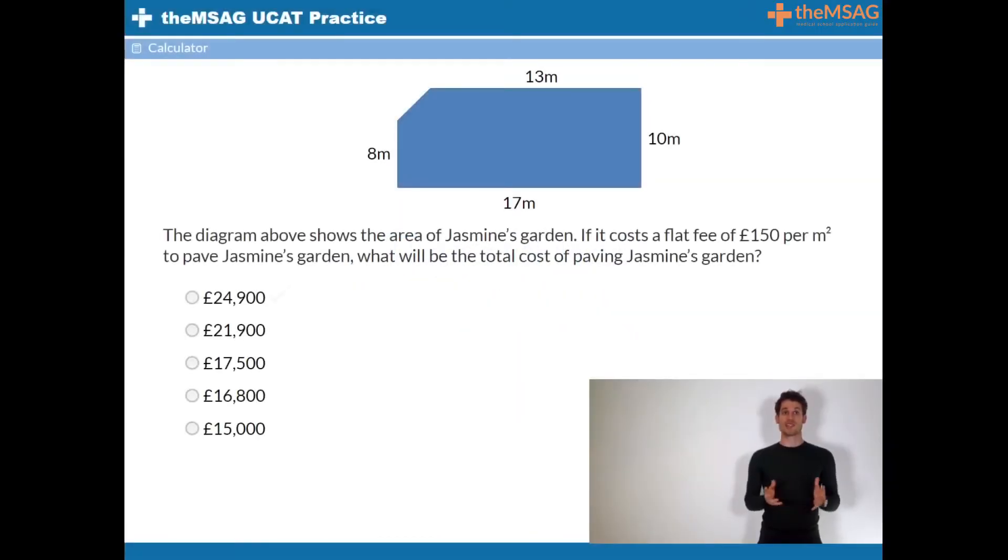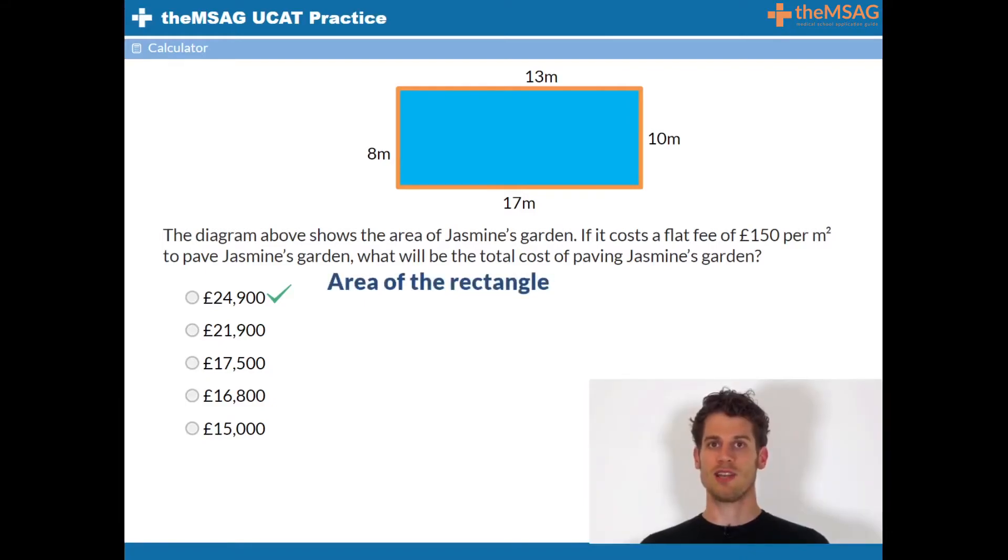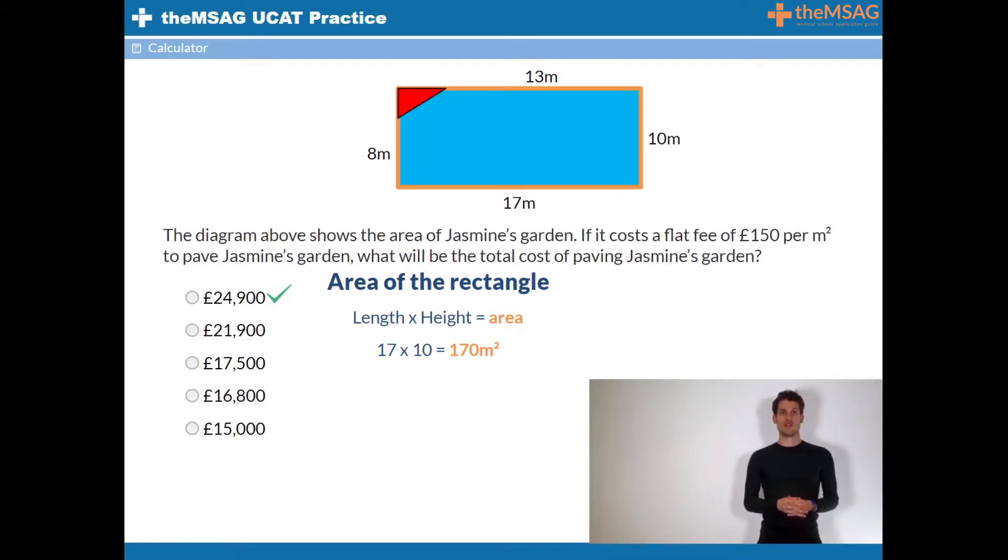So for question one, the answer was A. So instead of dividing the garden into several shapes, we could just pretend that we have a complete rectangle of length 17 meters and height 10 meters, and then subtract the area of the corner triangle. A rectangle of length 17 meters and height 10 meters will have an area of 17 times 10, therefore 170 meters squared. The corner triangle, which has been cut off, has a length of 4, 17 minus 13, and a height of 2, 10 minus 8.